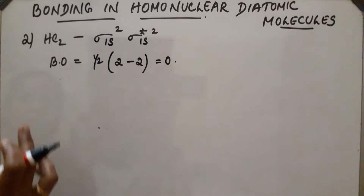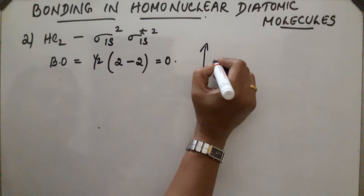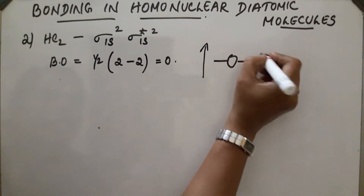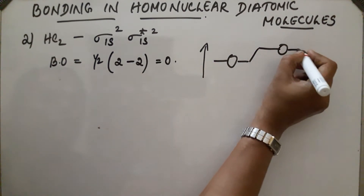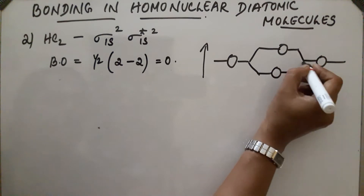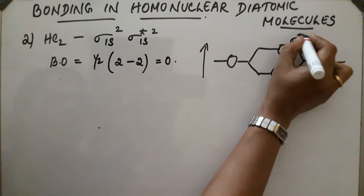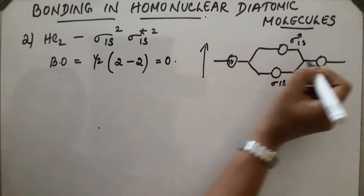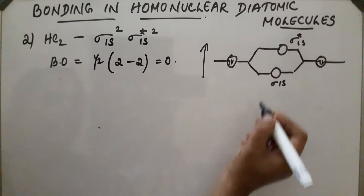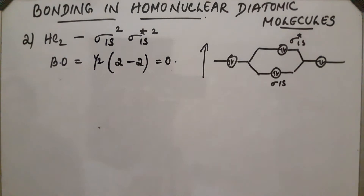He₂ is also diamagnetic because there are no unpaired electrons. The molecular orbital diagram shows sigma 1s with two electrons and sigma star 1s with two electrons, giving a total of 4 electrons. This is the molecular orbital diagram for the He₂ molecule.